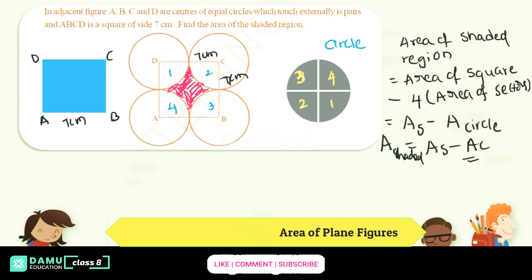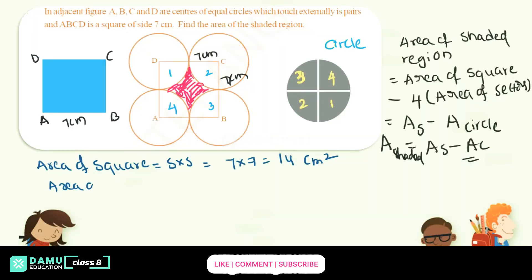Area of square equals side into side, that will be 7 into 7, which equals 49 centimeters squared.